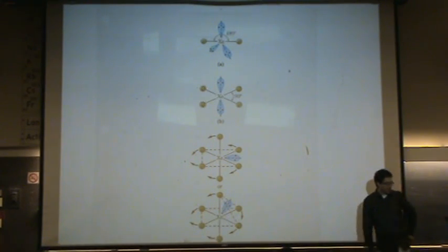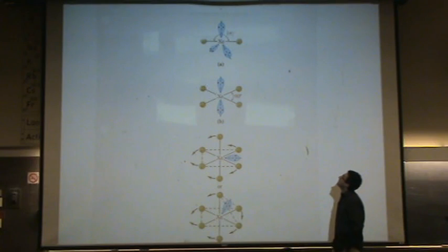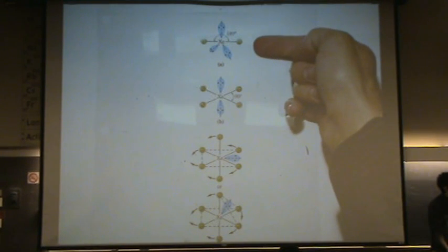Xenon F2, that one at the very top there, what is that electronic shape? Trigonal bipyramidal. What is its molecular shape? It's linear. It's a straight line.